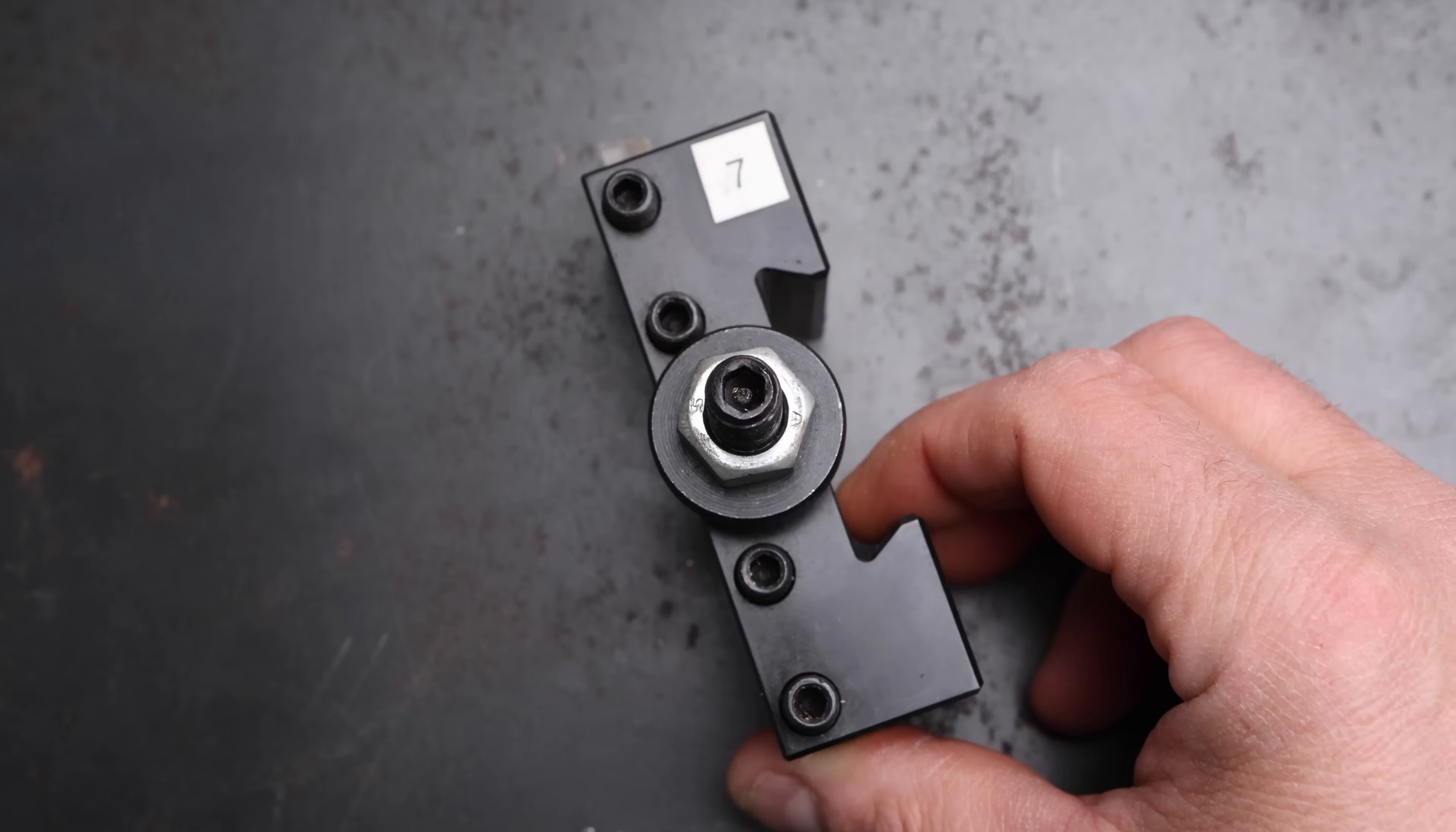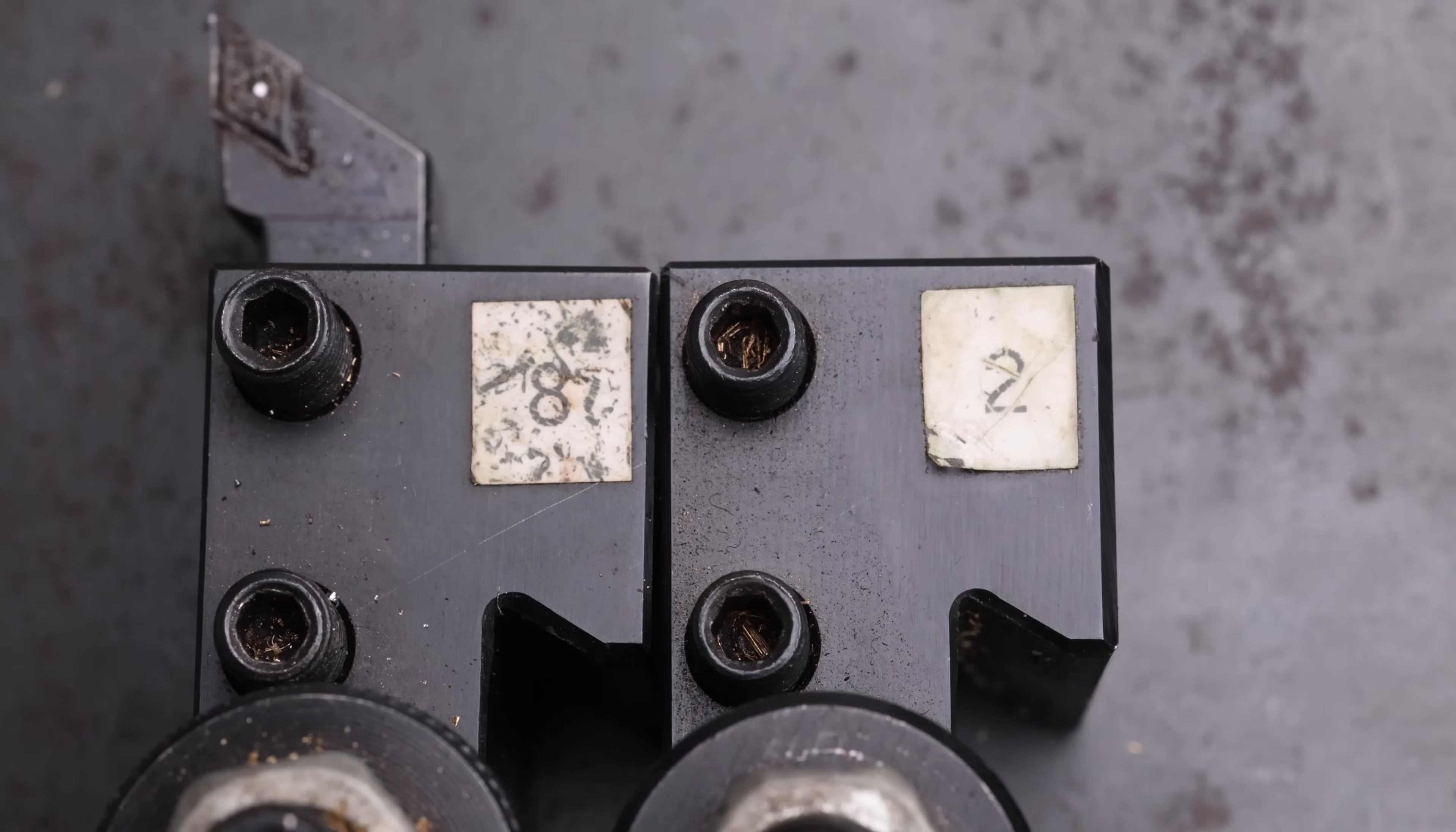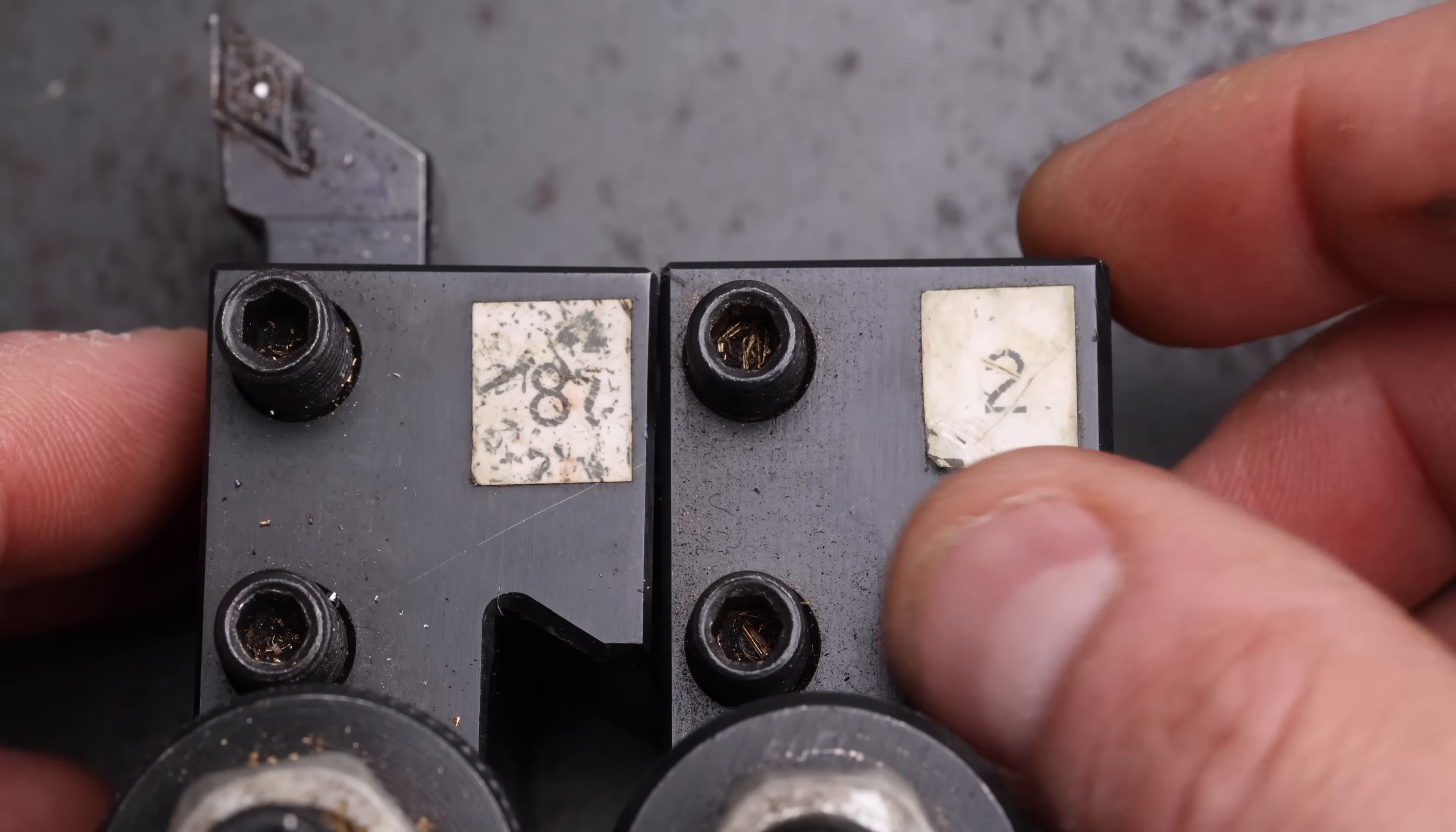I like to number my tool holders so that I can use them with the tool library on my lathe. I've been using a label printer up to now, but that's less than ideal. After a while, the labels start to get hard to read and they start peeling off. So let's use the laser to make it a bit more durable.